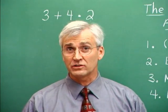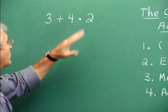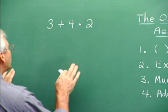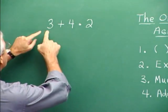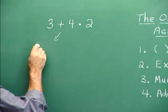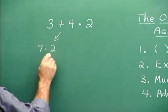Suppose we want to evaluate this expression. It says 3 plus 4 times 2. Well, one person evaluating the expression might think, let's see, it says 3 plus 4, that's 7. So maybe this is 7 times 2 or 14.